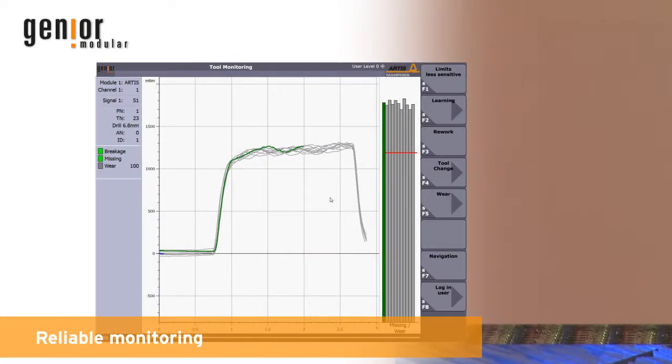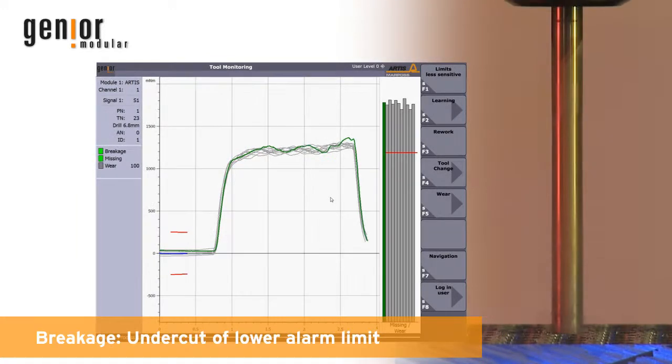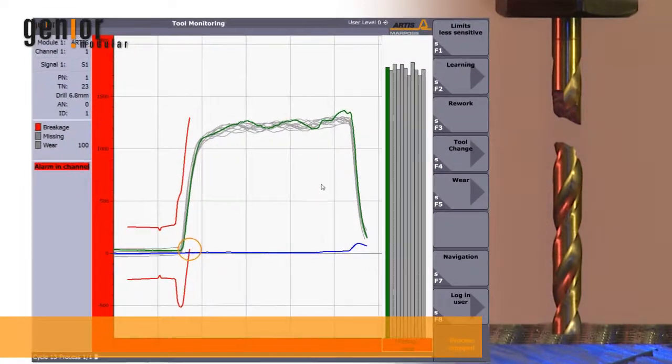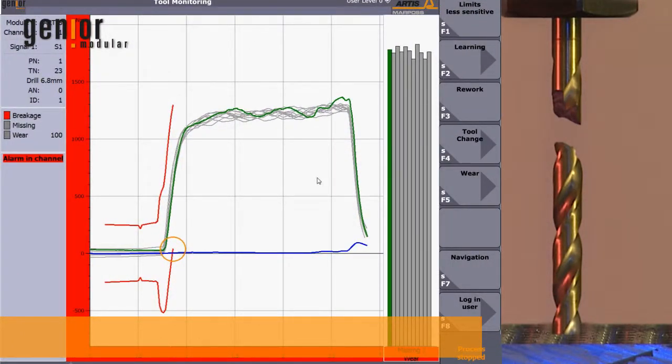How an alarm originates. With a broken or missing tool there is no load change caused by material contact. The lower alarm limit is undercut and the alarm is triggered.